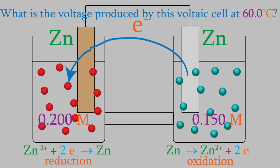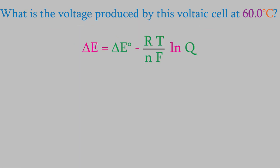So, what voltage will this voltaic cell produce? To find out, we'll use the Nernst equation, which you might remember from our discussion in the previous video. All we need to do is find the values of the items on the right side of the equation, and we'll be able to solve for the voltage, delta E.